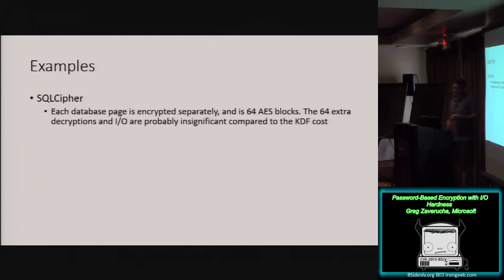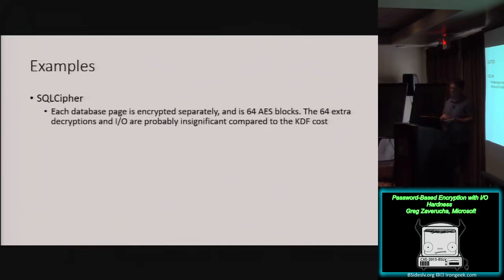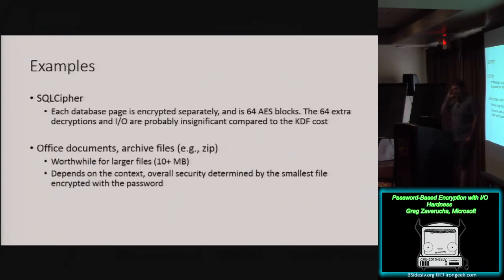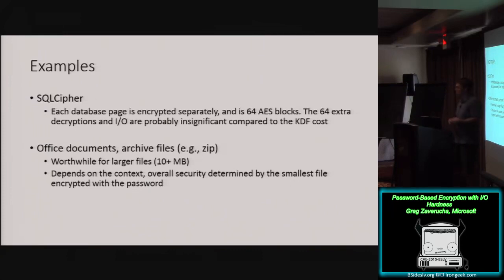Going back to my examples: SQL Cipher, which is an encrypted database, encrypts each page of the database separately and each page is pretty small — it's 64 AES blocks. So that extra decryption work you're forcing the attacker to do is probably insignificant relative to the KDF cost. For other file types like Office documents and archive files, where they're usually larger, this probably makes sense and would improve security. But you do have to be careful: if you're encrypting multiple files with the same password, the attacker can pick the smallest one to do his brute force attack with.